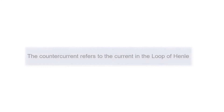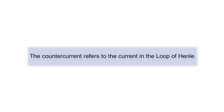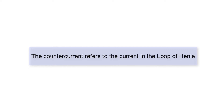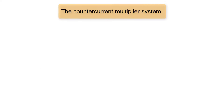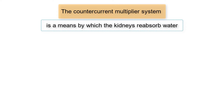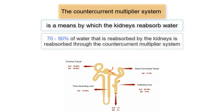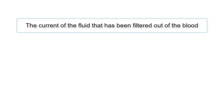Number 1. The countercurrent refers to the current in the loop of Henle. The countercurrent multiplier system is a means by which the kidneys reabsorb water. 70 to 90 percent of water that is reabsorbed by the kidneys is reabsorbed through the countercurrent multiplier system. The specific current mentioned is the current of the fluid that has been filtered out of the blood, known as filtrate, as it passes through the loop of Henle.